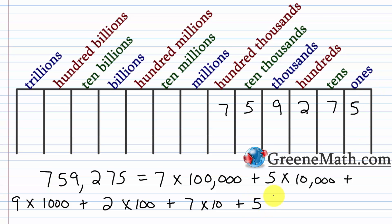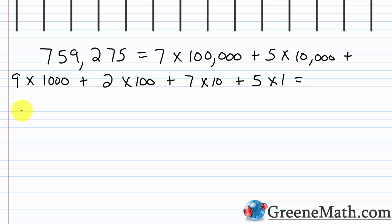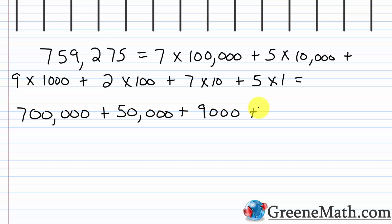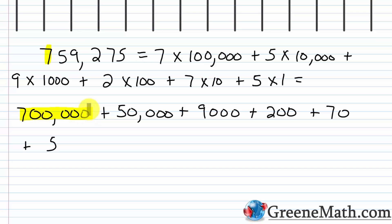Let's do a little multiplication. 7 times 100,000 is 700,000. Plus 5 times 10,000 is 50,000. Plus 9 times 1,000 is 9,000. Plus 2 times 100 is 200. Plus 7 times 10 is 70. And lastly plus 5 times 1, that's 5. By taking this number from standard notation and putting it in expanded notation, we can see the true value of each digit. The 7 is 700,000 because it's in the 100,000s place. The 5 is 50,000 because it's in the 10,000s place. The 9 is 9,000. The 2 is 200. The 7 is 70. And the 5 is just 5 because it's in the 1s place.